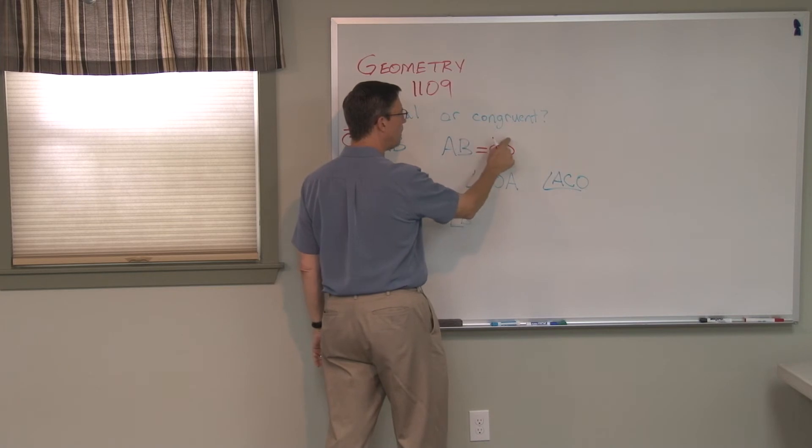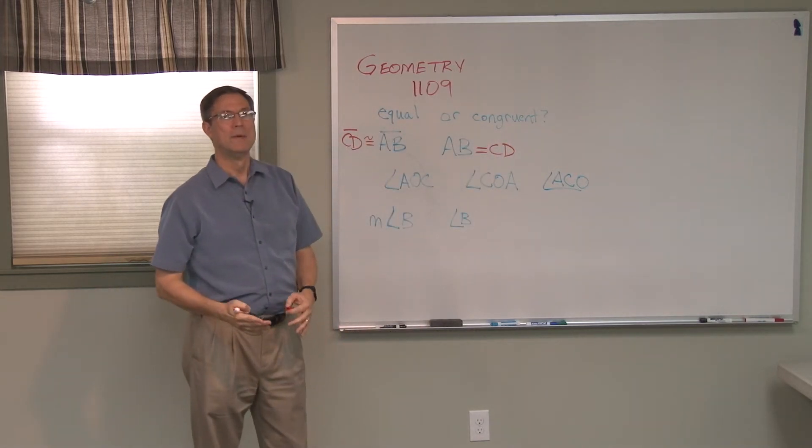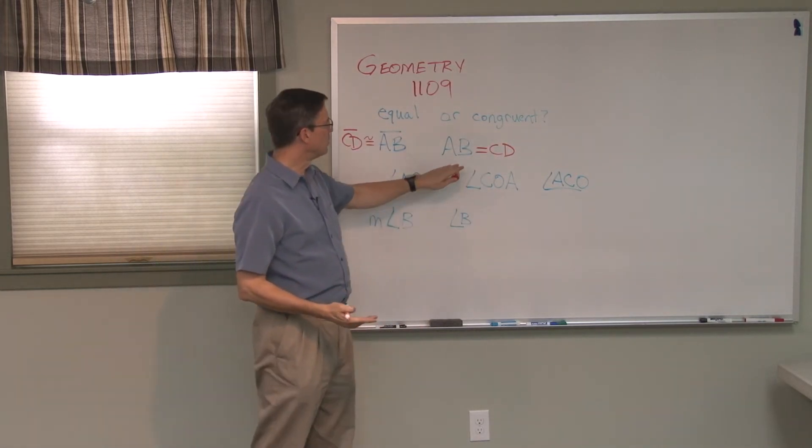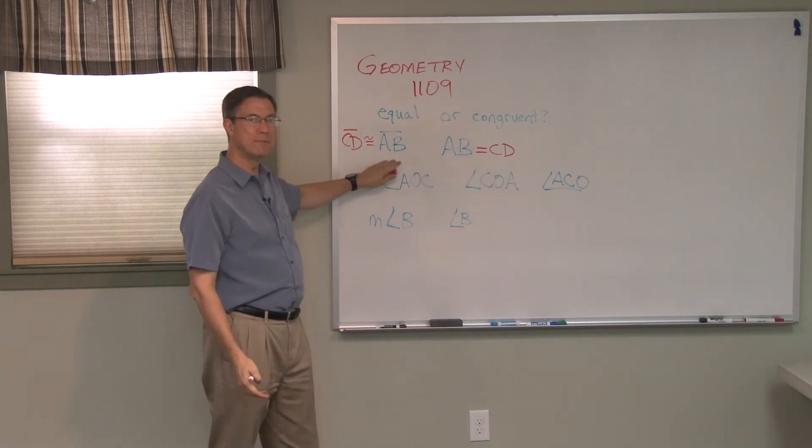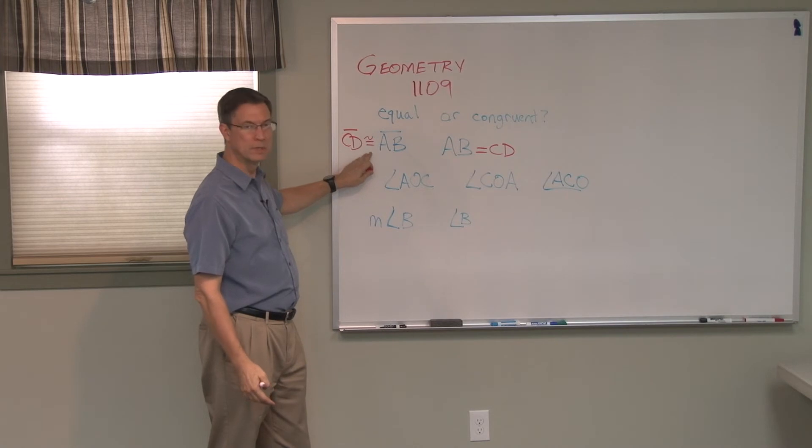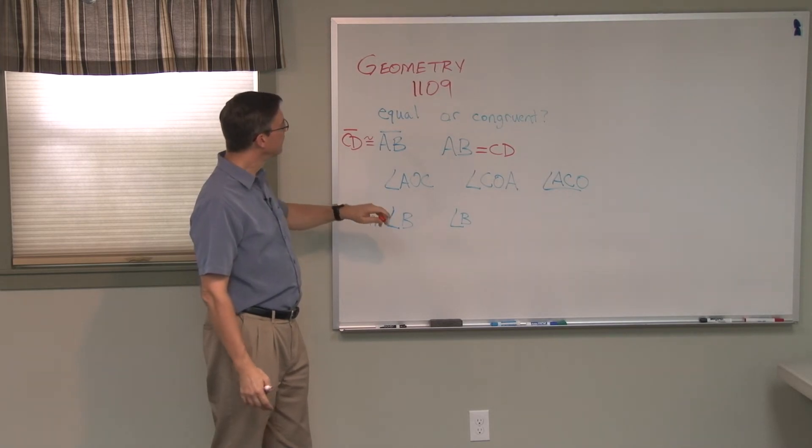If we're talking about AB, the length of AB being equal to CD, then we don't put the bar over top and we don't have the tilde, because we're again referencing the numbers. Two numbers can be equal; two shapes can be congruent.